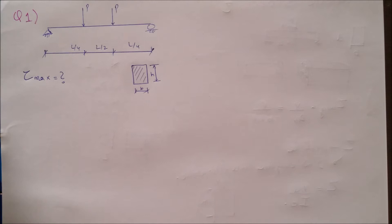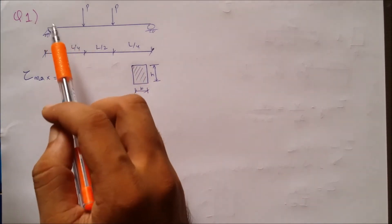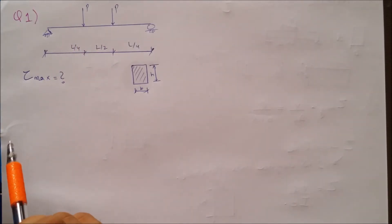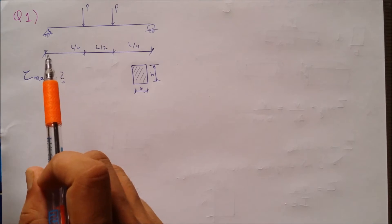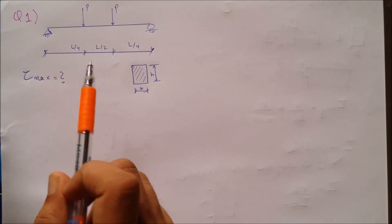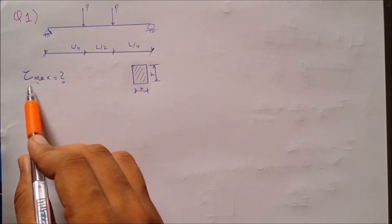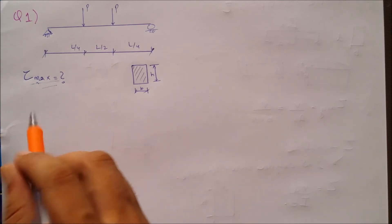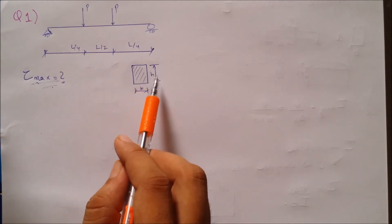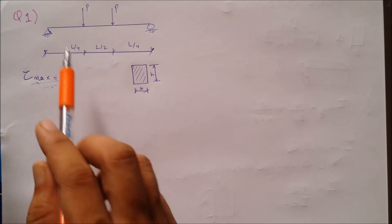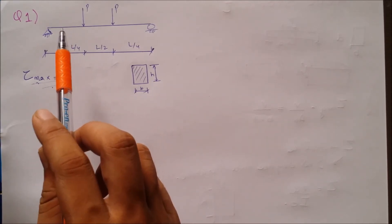In this video, we are going to discuss the first example of calculation of shear stress in a structural member. We are given a simply supported beam with two point loads acting in the mid span. The loads are at span/4, span/2, and span/4 from the right. We are required to find out the maximum shear stress, for which we need to construct the stress profile of the member. For this, we first need to find the maximum shear force of the given structure.